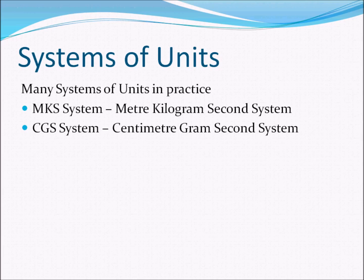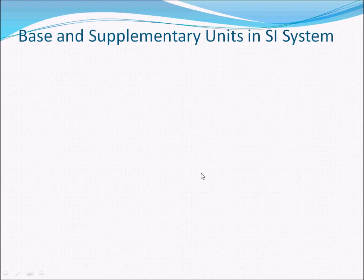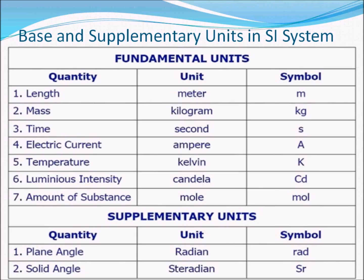The system we will study in most detail is the SI system — the International Standard System of Units — the most widely used among scientists and engineers worldwide. It is abbreviated SI from the French version of 'international standard', not the English. In the SI system, there are a total of seven fundamental units and two supplementary units, and using these we can form units for any derived quantity of interest, no matter how complicated.